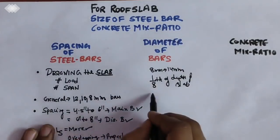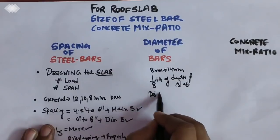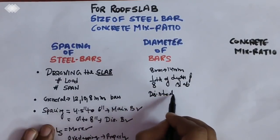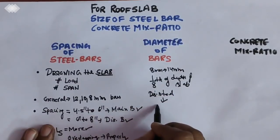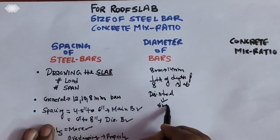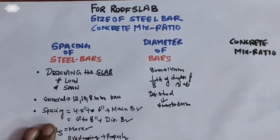For the distribution steel, the diameter varies from 6mm to 8mm. This is an important point to note down.